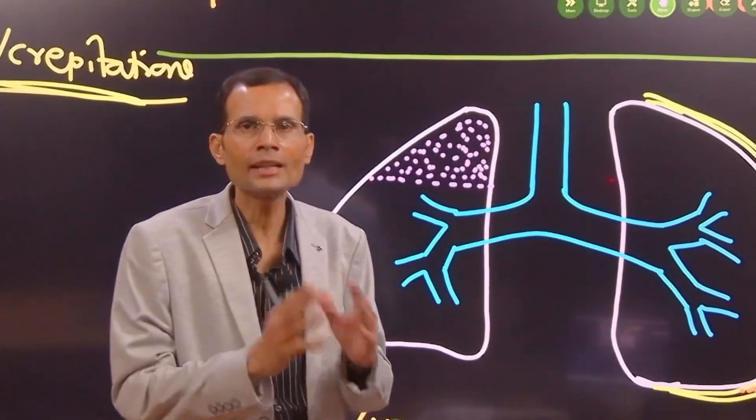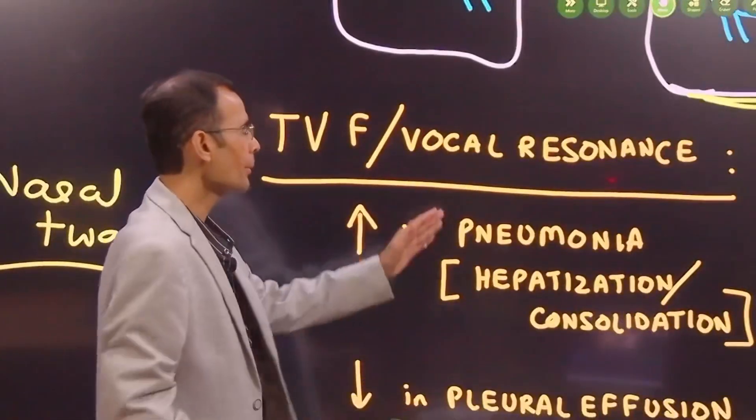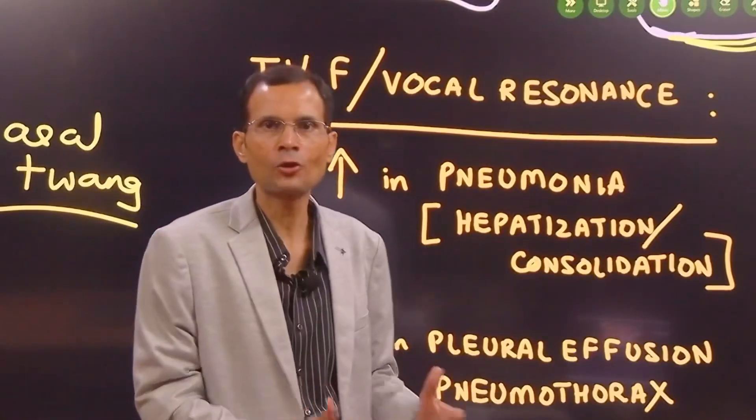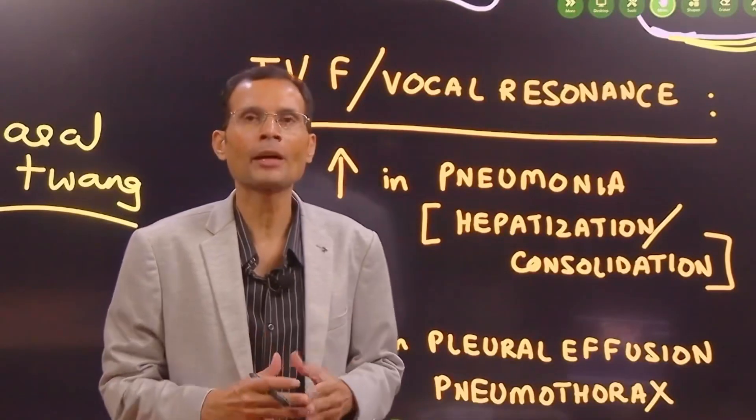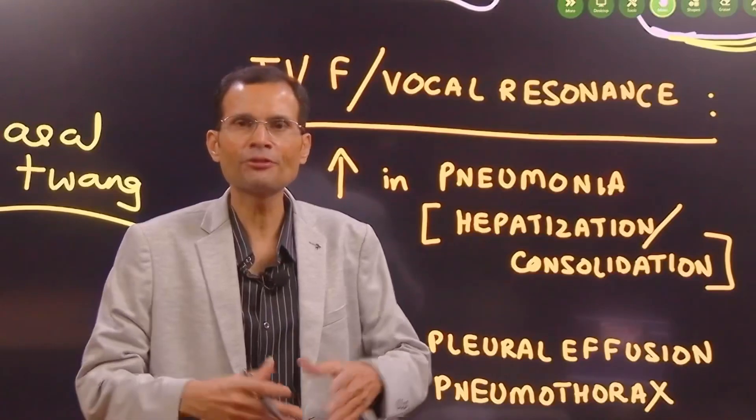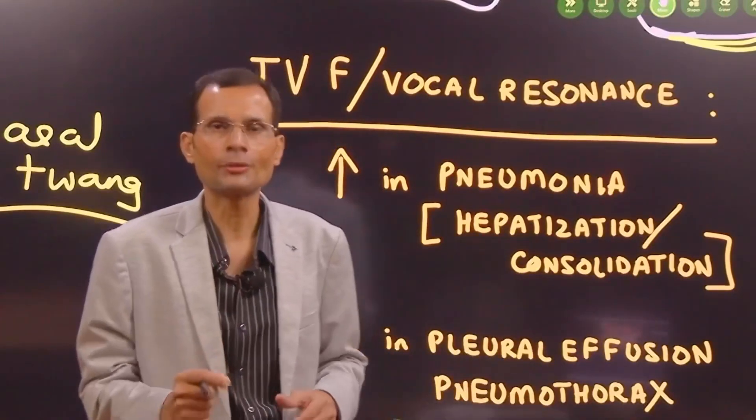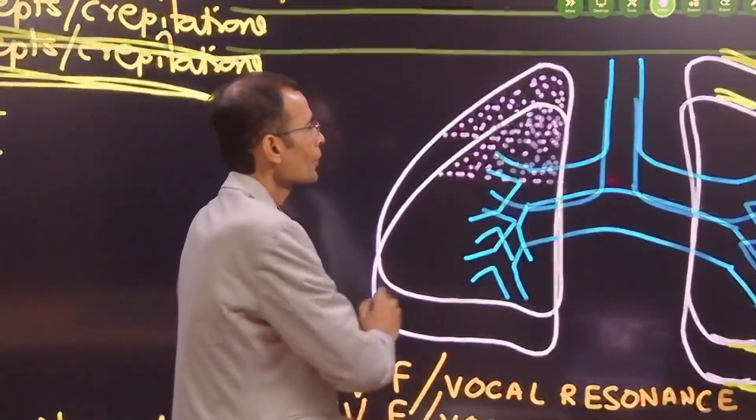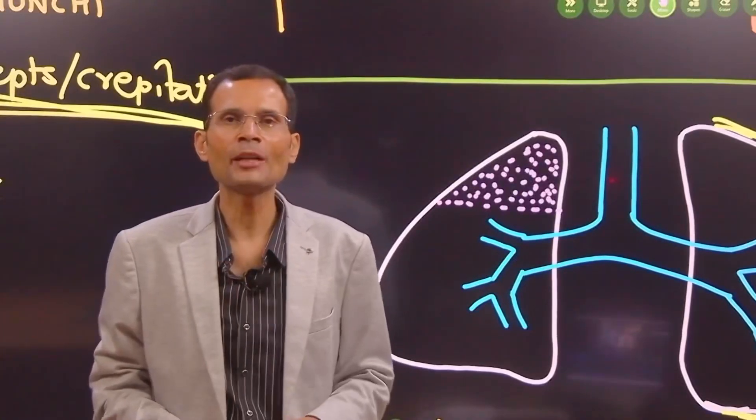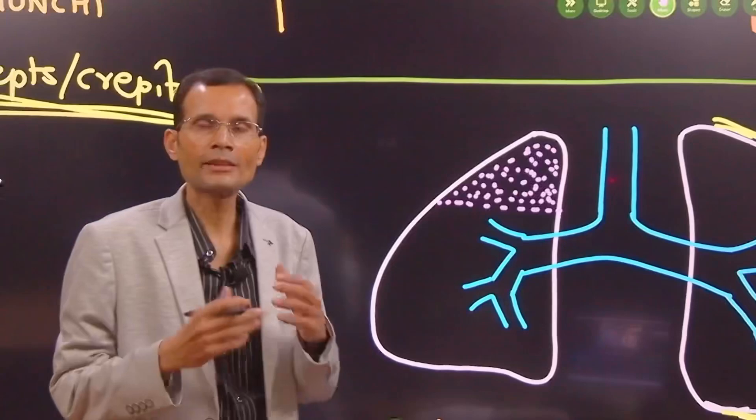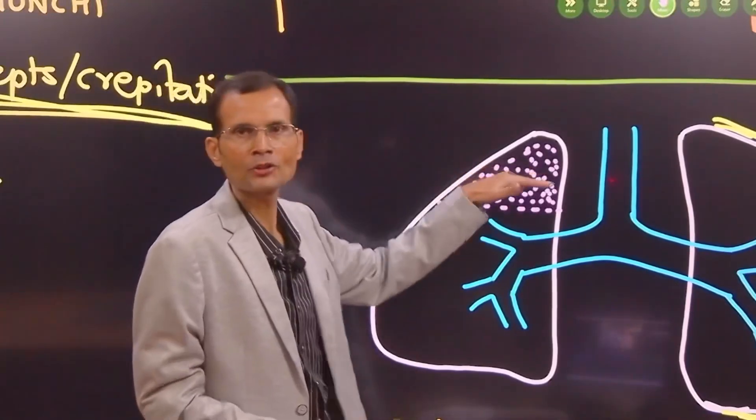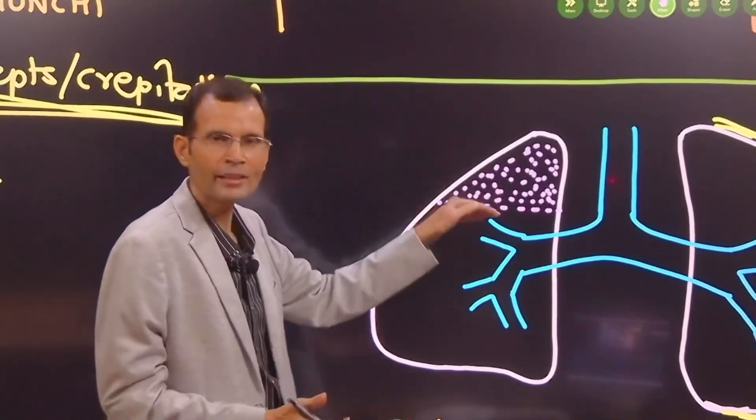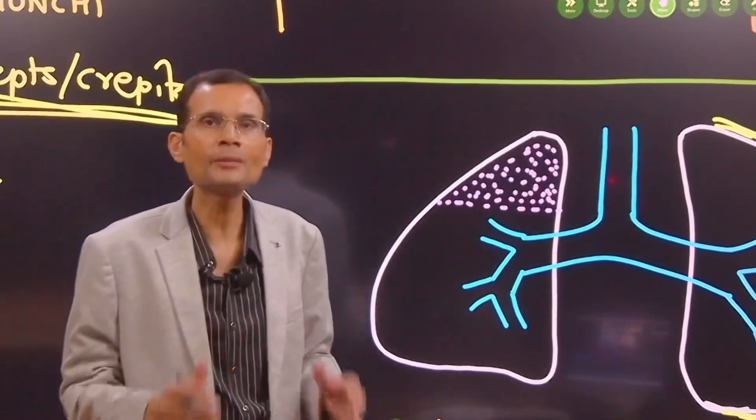So tactile vocal fremitus or vocal resonance is increased in the pneumonia. Because pneumonia, as an infection occurs in the lungs, there is hepatization of the lung parenchyma. Hepatization means the lung parenchyma becomes firm like liver, and later on consolidation. And remember, consolidation or solidification of the lung parenchyma - lung parenchyma will become solid - and solids are good conducting medium for the sound and for those vibrations. And therefore the tactile vocal fremitus will be felt better over the patch of pneumonia. And that is what has probably happened here - there was higher tactile vocal fremitus on the right side, right apical region, compared to the left. So it is probably lobar pneumonia on the right side.